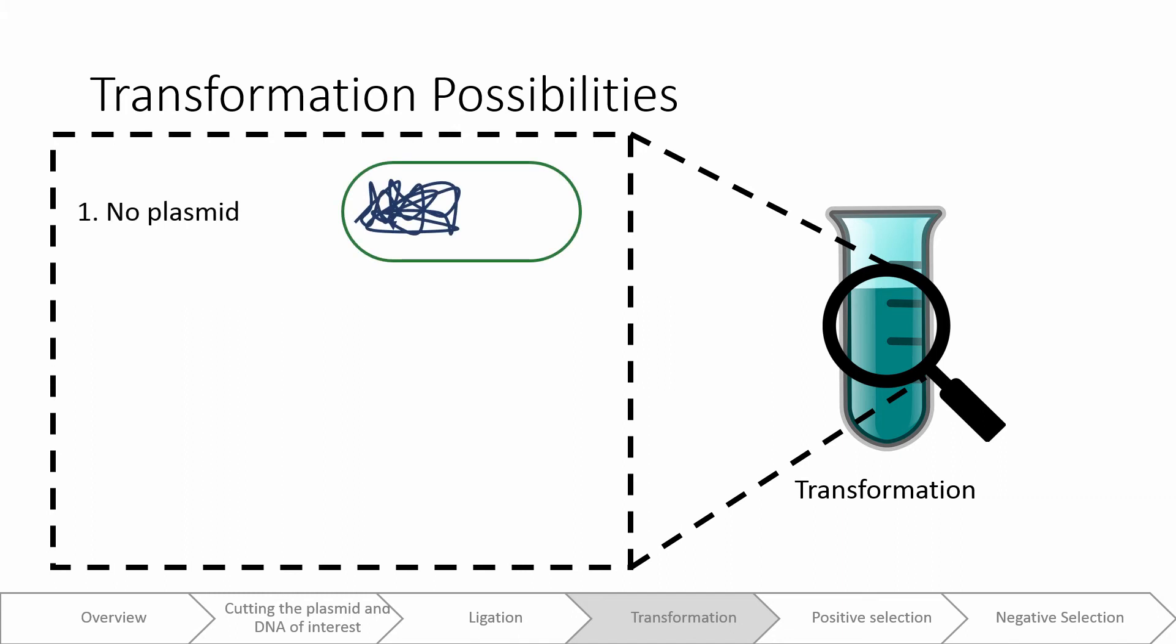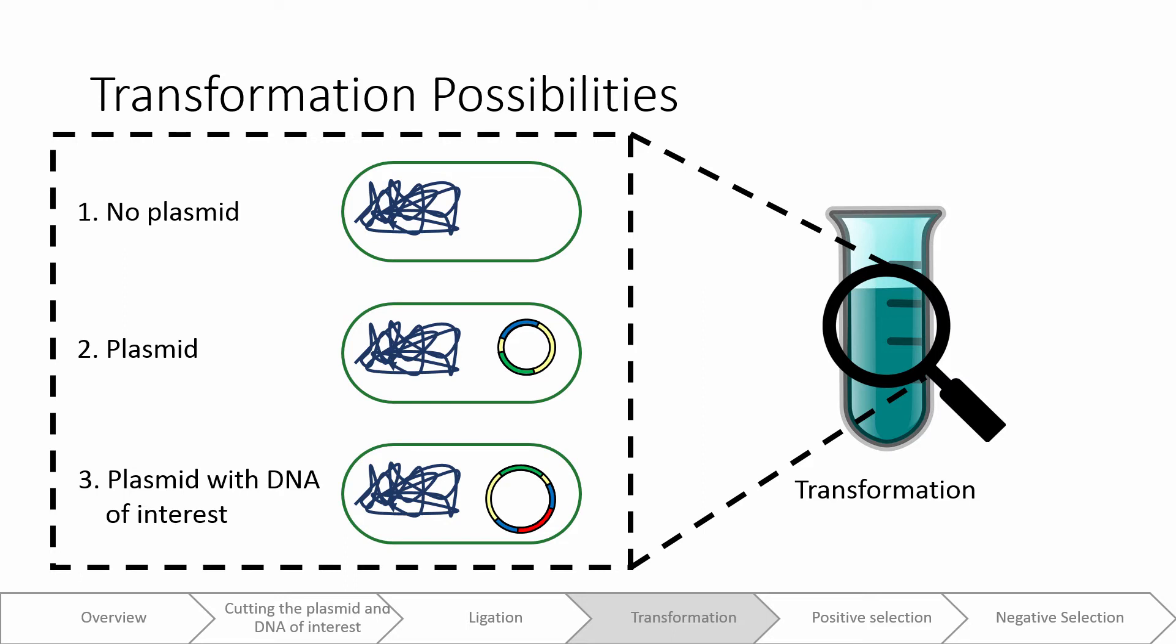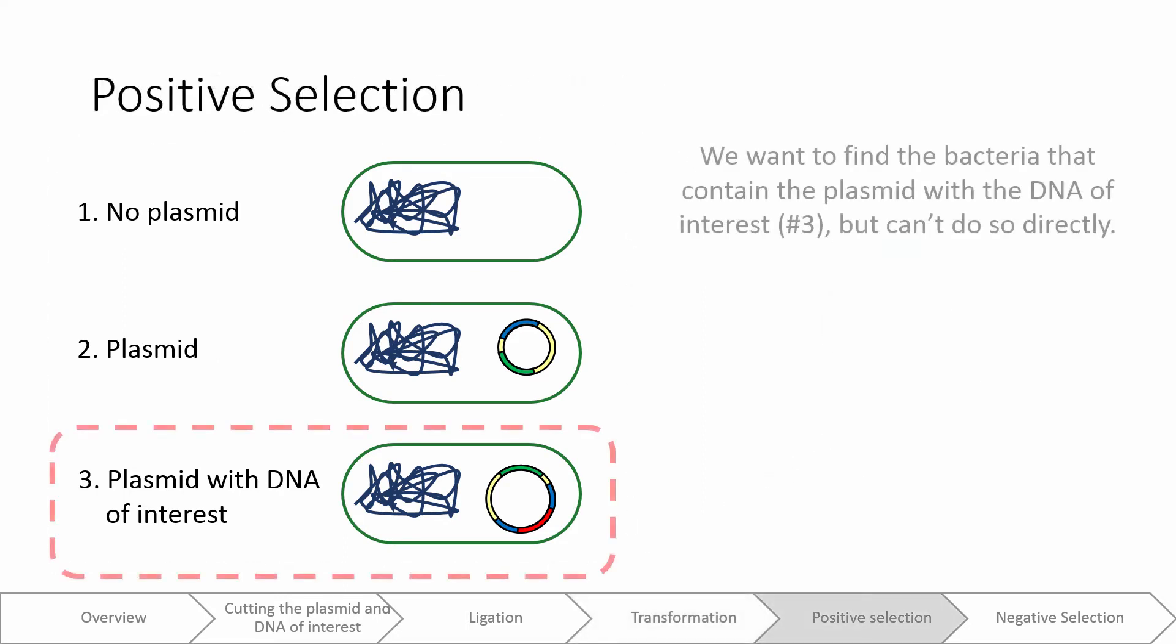One, you could have E. coli that did not take up any DNA. Two, you can have E. coli that have taken up a plasmid that does not contain your DNA of interest. Or three, you have E. coli that have taken up a plasmid that does contain your DNA of interest. Ultimately, we want to find the bacteria that contain the plasmid with our DNA sequence of interest within it, but we cannot figure this out directly.